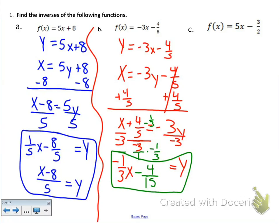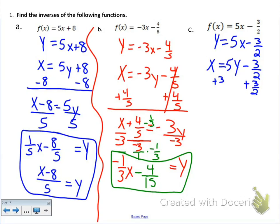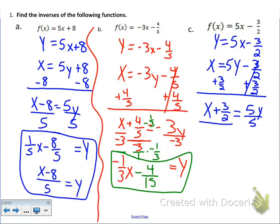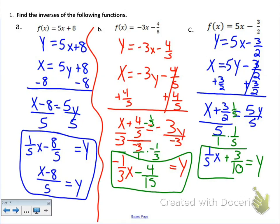Letter C: f of x equals 5x minus 3-halves. Change it to y, then switch the place of x and y. Add 3-halves to both sides, giving x plus 3-halves equals 5y. Divide both sides by 5, giving one-fifth x. Over here we again have a fraction inside a fraction, so we multiply by the reciprocal of one-fifth. 3 times 1 is 3, 2 times 5 is 10. So y equals one-fifth x plus 3-tenths.